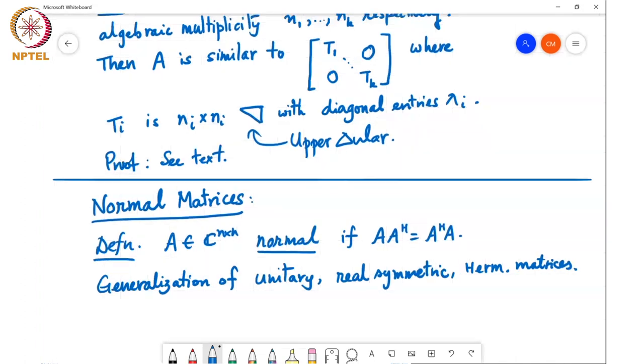So, just to illustrate that, if U is unitary, then UU Hermitian equals U Hermitian U, which is equal to the identity matrix, implies unitary matrices are normal matrices.